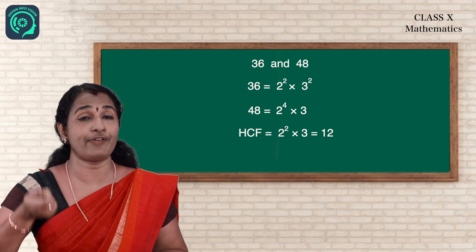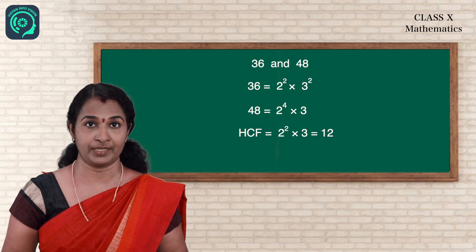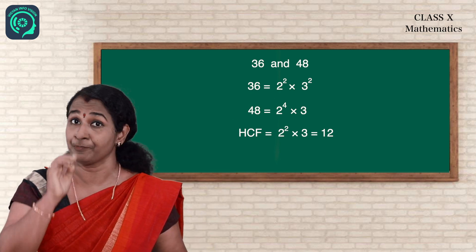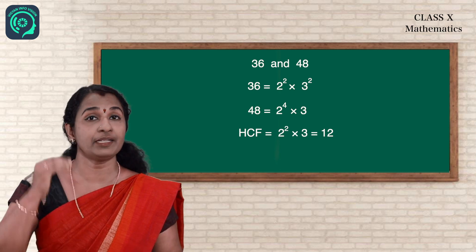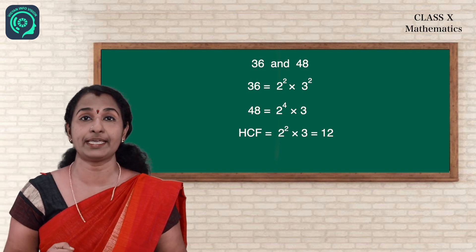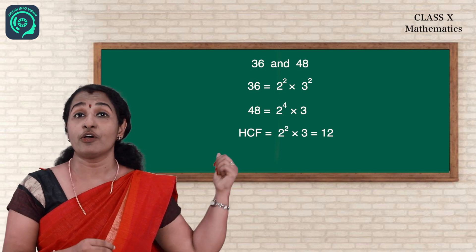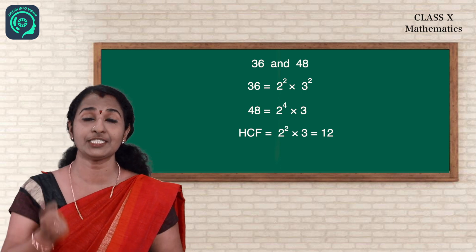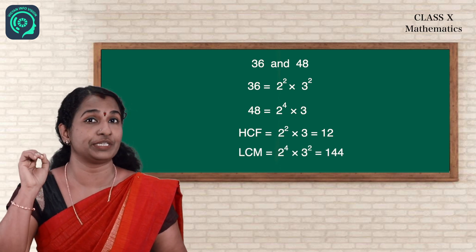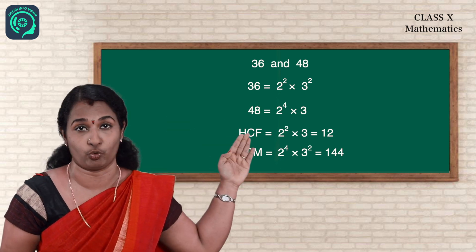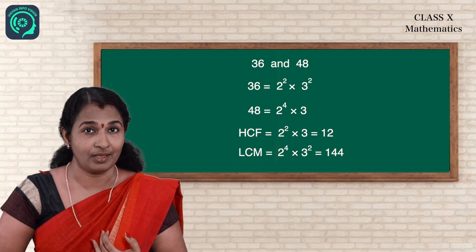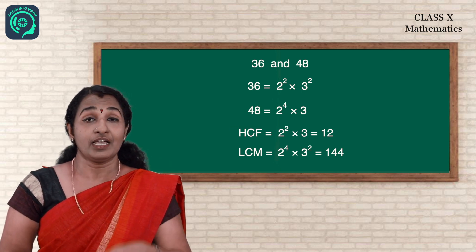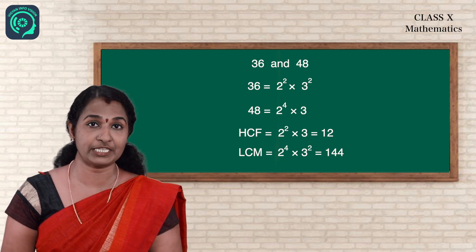When finding LCM, take all the factors with the highest power. Between 2² and 2⁴, the highest is 2⁴; between 3 and 3², the highest is 3². So LCM = 2⁴ × 3² = 16 × 9 = 144.